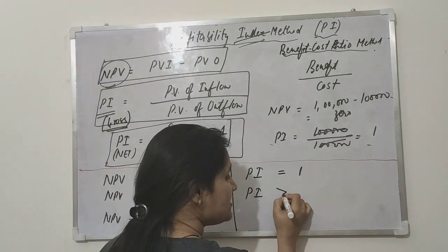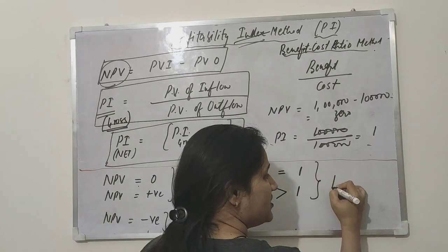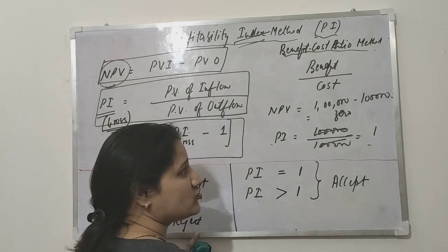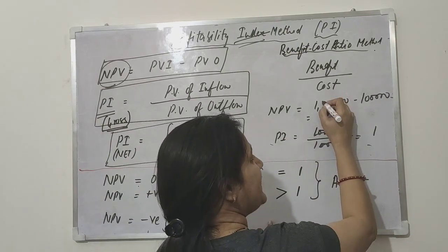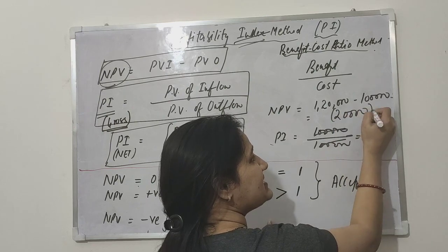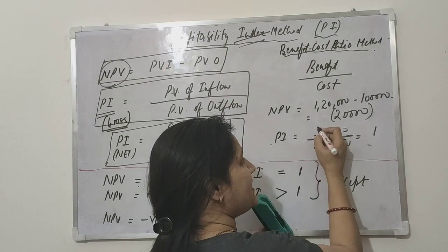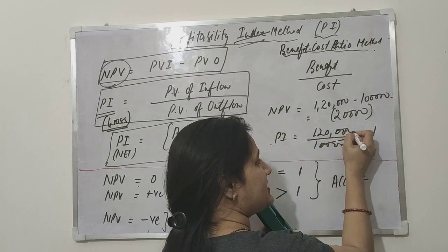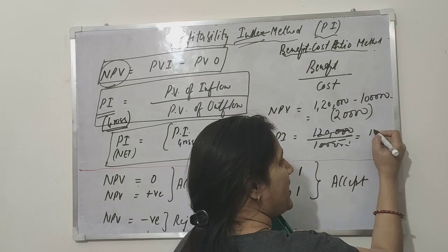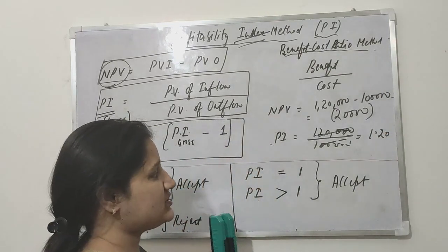When PI is more than 1, that is better option. That means we should accept. If we have 1,20,000 inflow, then your NPV has 20,000 value added. Similarly, how do we calculate here? 1,20,000 divided by 1,00,000 - our answer is 1.20.